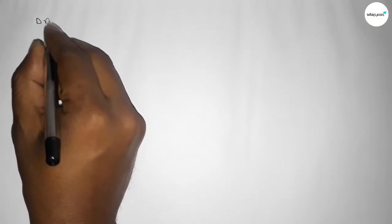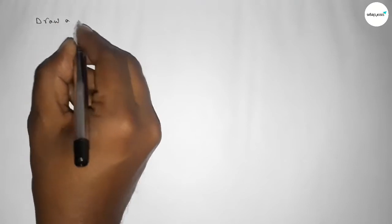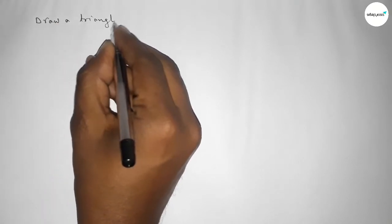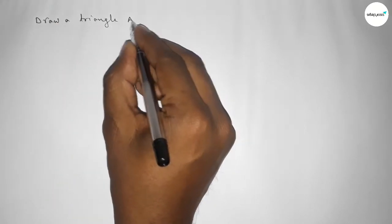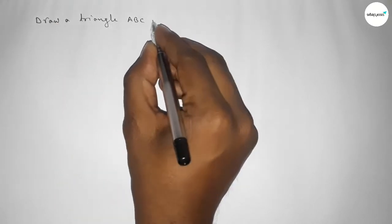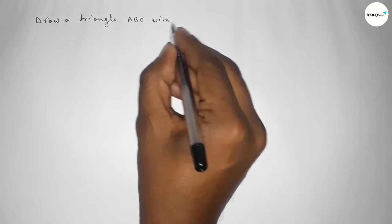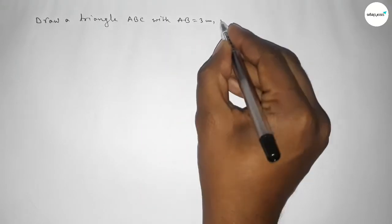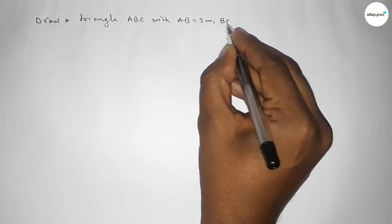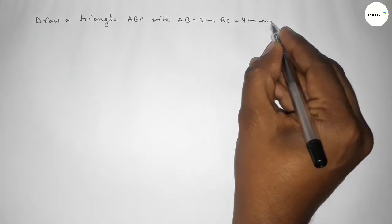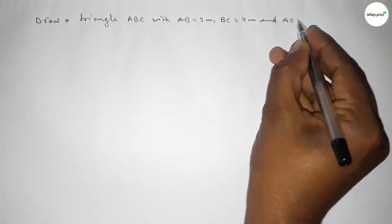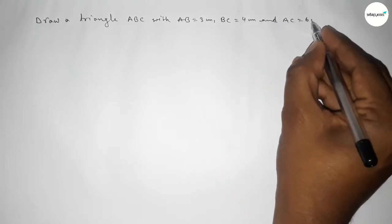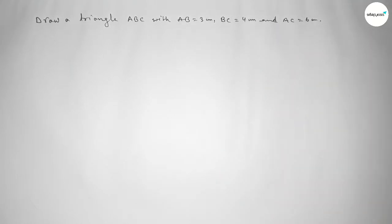Hi everyone, welcome to SI Share Classes. Today in this video we have to draw a triangle ABC with AB equal to 3 centimeter, BC equal to 4 centimeter, and AC equal to 6 centimeter by using compass. So let's start the video.